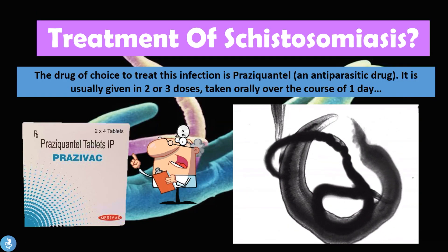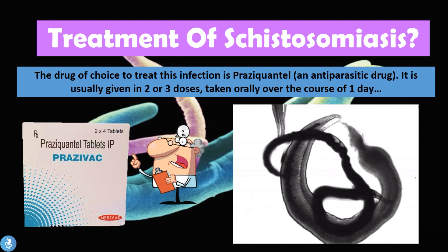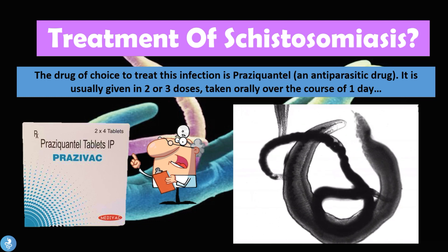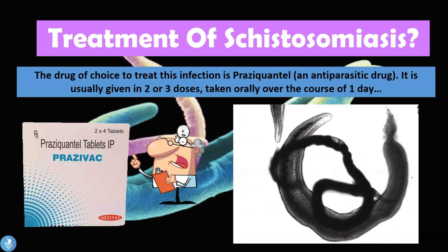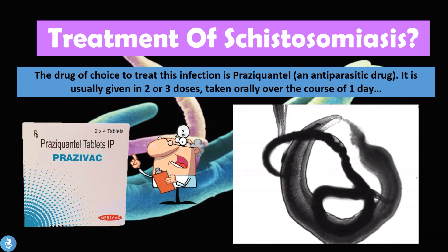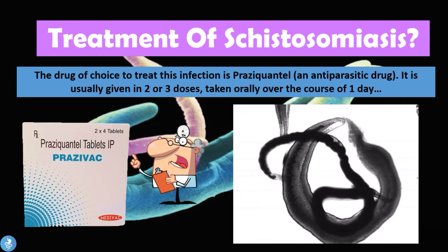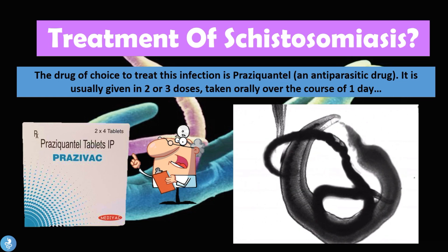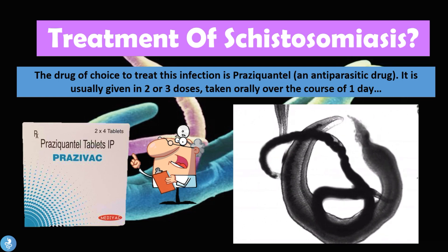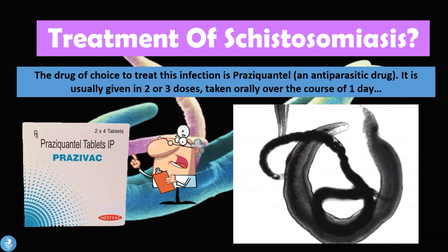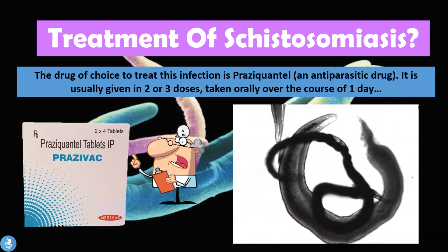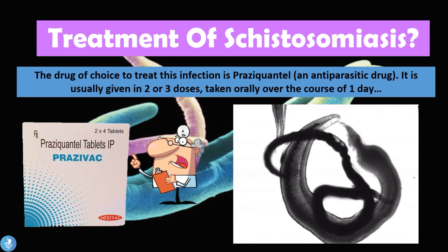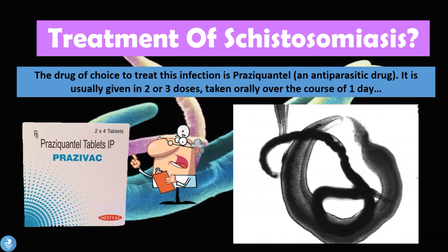The drug of choice to treat Schistosomiasis is Praziquantel, an antiparasitic drug usually given in two to three doses taken orally over the course of one day.